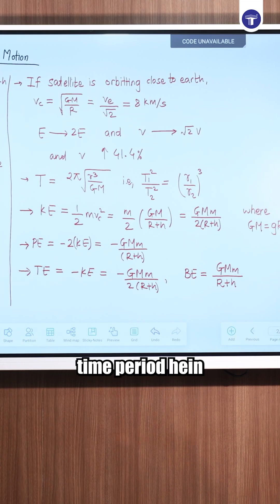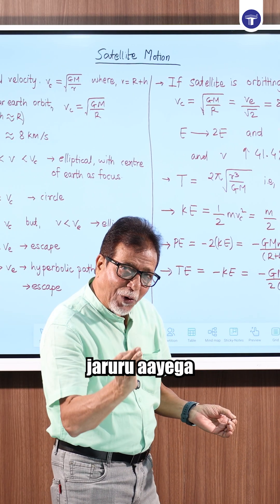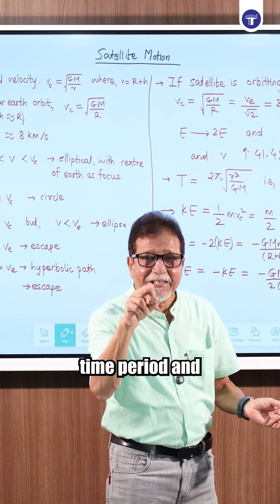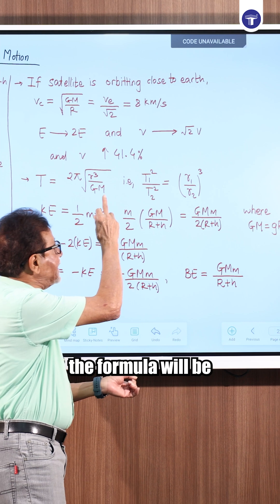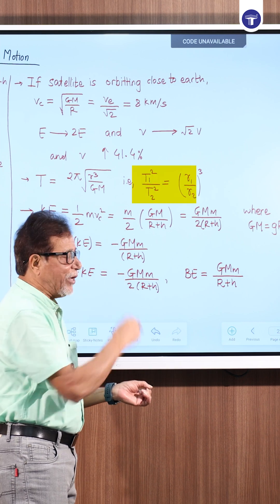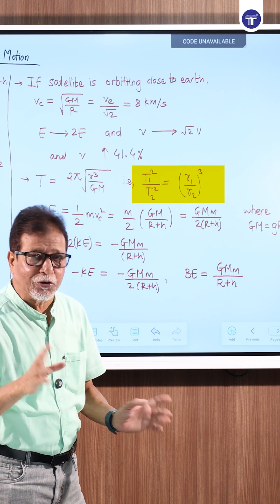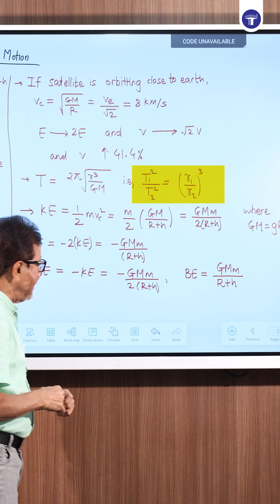The satellite time period is given by T = 2π√(r³/GM). If a question asks for the relation between time period and radius of orbit, the formula will be T1²/T2² = (r1/r2)³. There will be a lot of questions on this formula.